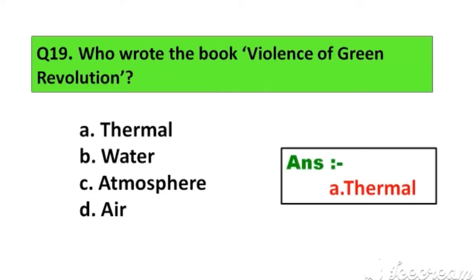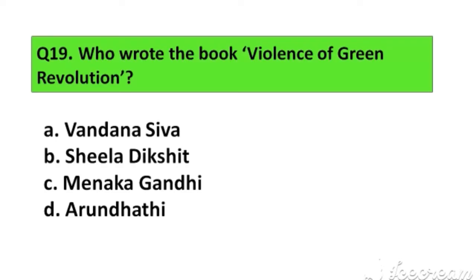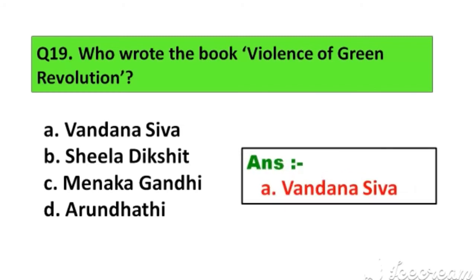Question number 19. Who wrote the book 'Violence of Green Revolution'? Option A. Vandana Shiva, B. Sheila Dixit, C. Menaka Gandhi, D. Arundhati. The right answer is Option A. Vandana Shiva.